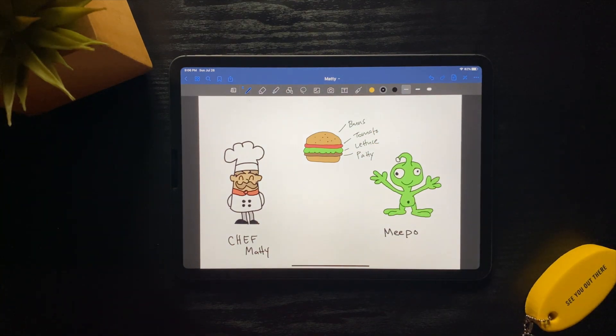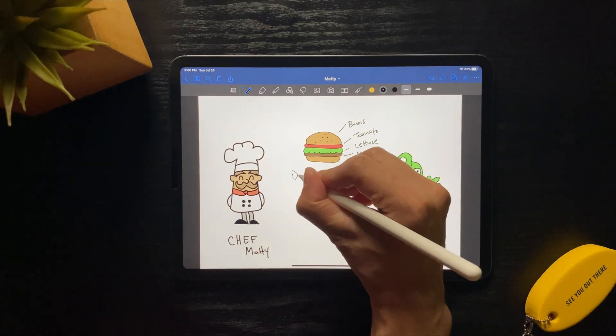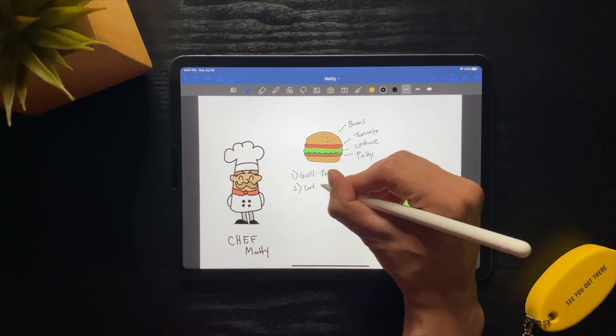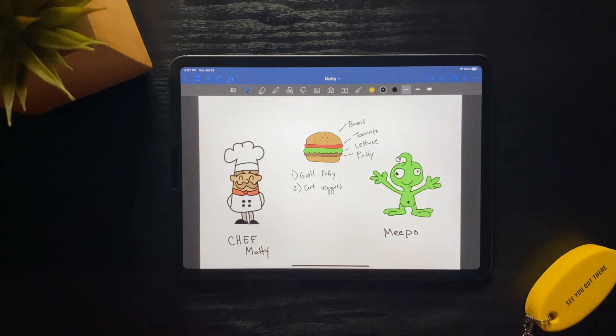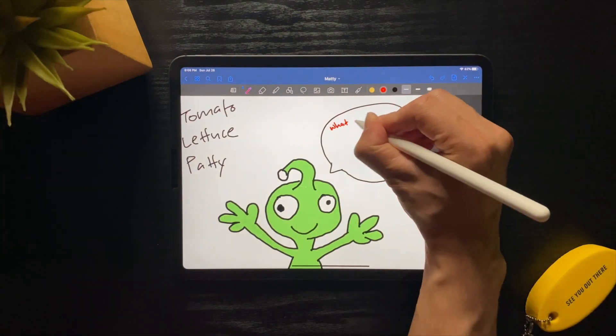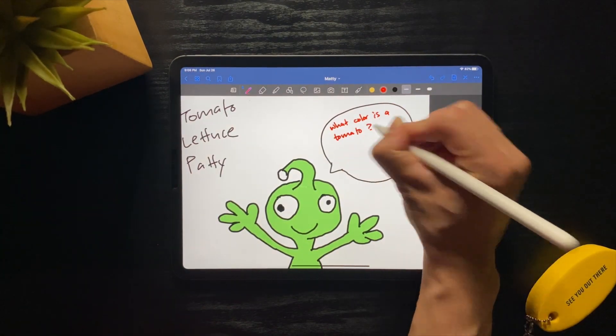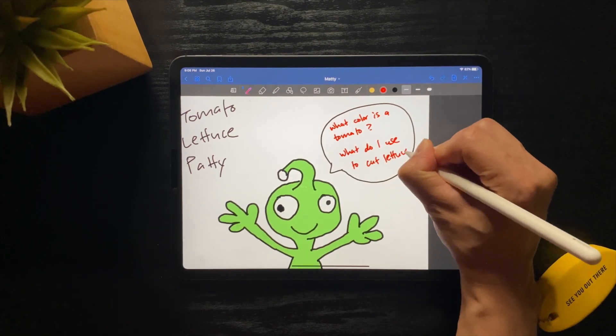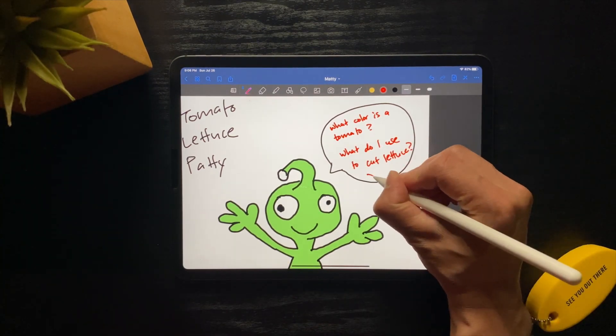Then you might walk through the steps of grilling the patty, cutting the tomato and lettuce, before assembling your meal. But Meepo is very foreign, and has never heard of any of these ingredients, and asks questions like, What's the color of a tomato? What do you use to cut lettuce? And hundreds of other similar questions.